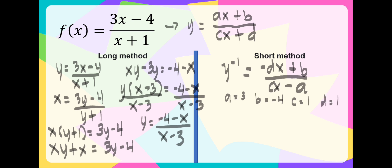Using these values, let us substitute all the given values in the formula. The inverse of y is equal to negative 1 times x, which is negative x, then plus b which is negative 4, so minus 4, over cx which is 1 times x, so we have x, minus a which is positive 3. So as you can see, they have the same inverse.